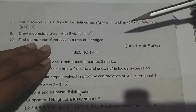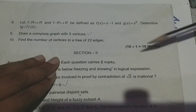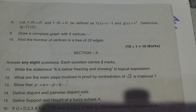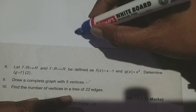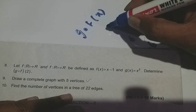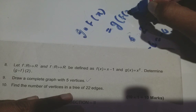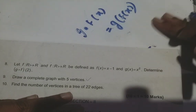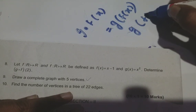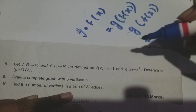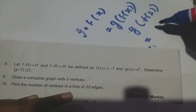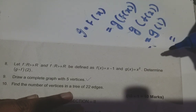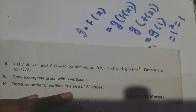Next: find g-composition-f of 2, given f(x) and g(x). g∘f of x equals g of f(x). With x equals 2: f(x) equals x minus 1, so f(2) equals 2 minus 1 equals 1. Then g(x) equals x squared, so g(1) equals 1 squared equals 1.